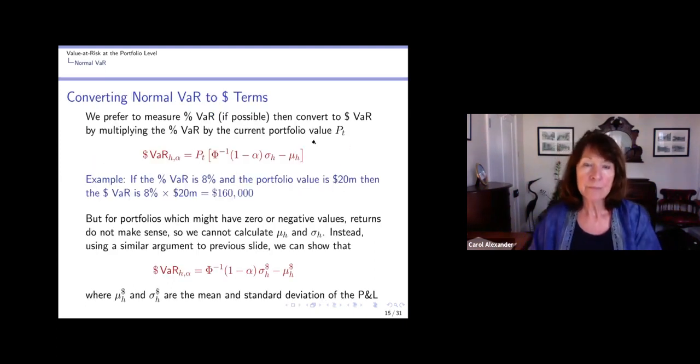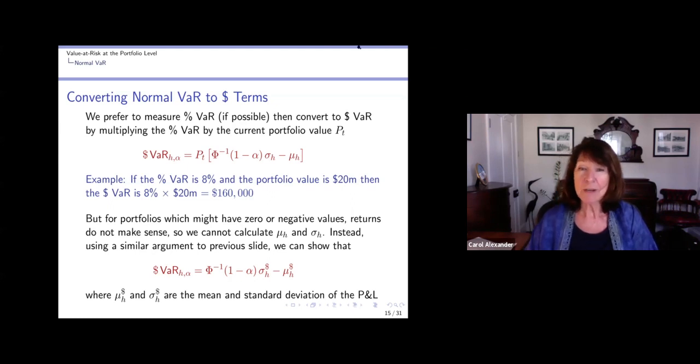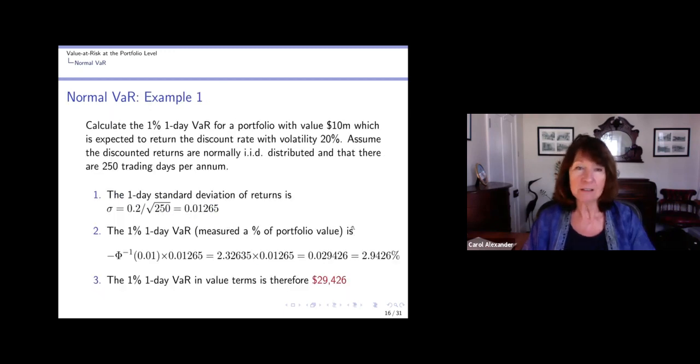Now I'm going to show how to convert from the percentage VaR to a dollar value. All we do is we multiply it by the current portfolio value P_t. If the percentage VaR is 8% and the portfolio value at time t is $20 million, then the VaR in dollar terms is just 8% of $20 million, which is $160,000. As I mentioned many times, we may not be able to get a percentage VaR anyway, in which case we just use the sigma and the mu from the P&L distribution without multiplying it by the portfolio value, because these will already be in dollar amounts.